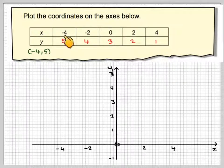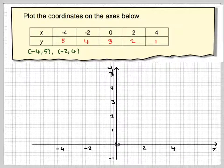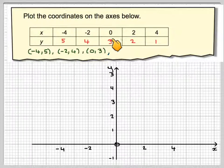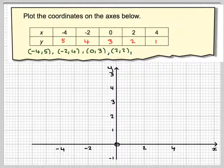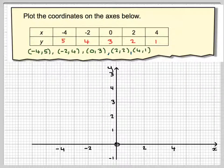The points are: minus 4, 5; minus 2, 4; 0, 3; 2, 2; and 4, 1.